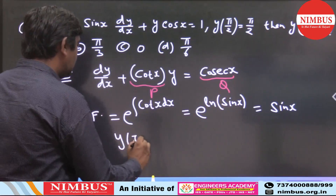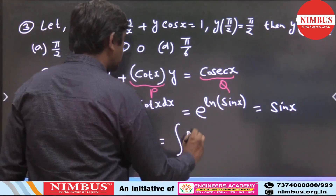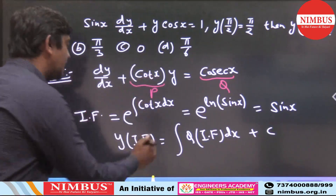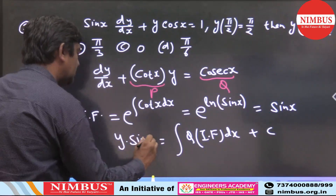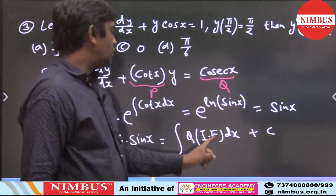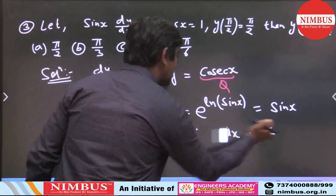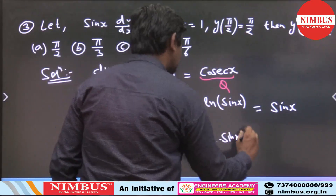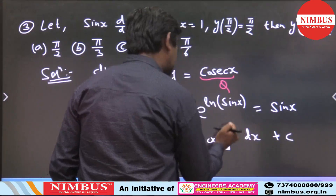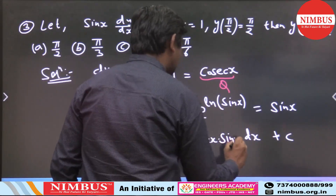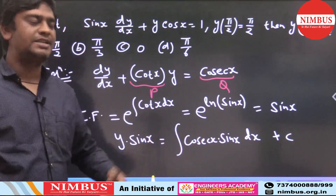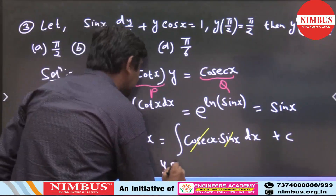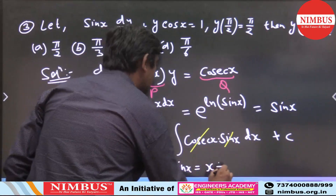Now apply the formula: y × (integrating factor) = integral of Q × (integrating factor) dx + constant C. So y·sin x = integral of cosec(x)·sin(x) dx + C. Since cosec(x) = 1/sin(x), we get cosec(x)·sin(x) = 1, and the integral of 1 is x. Therefore, y·sin(x) = x + C. This is our general solution.